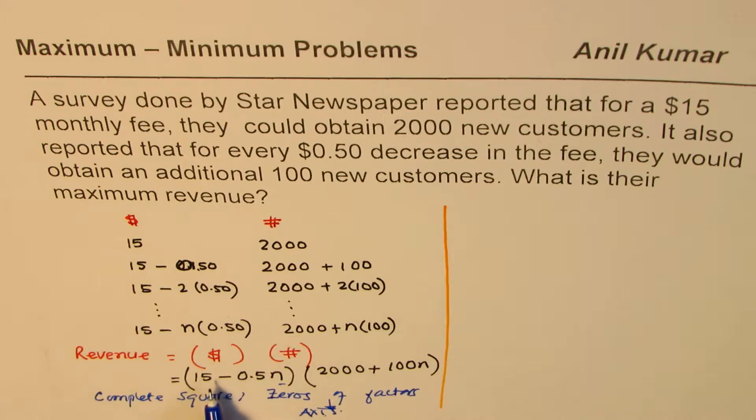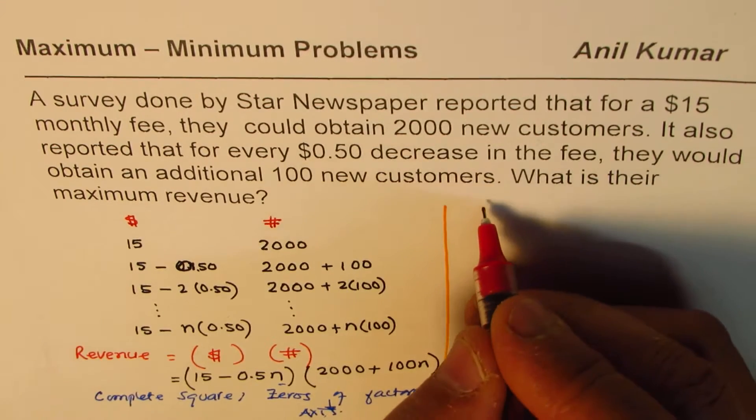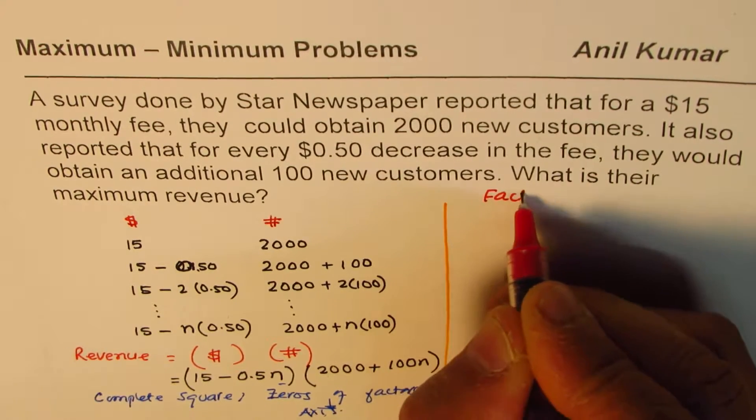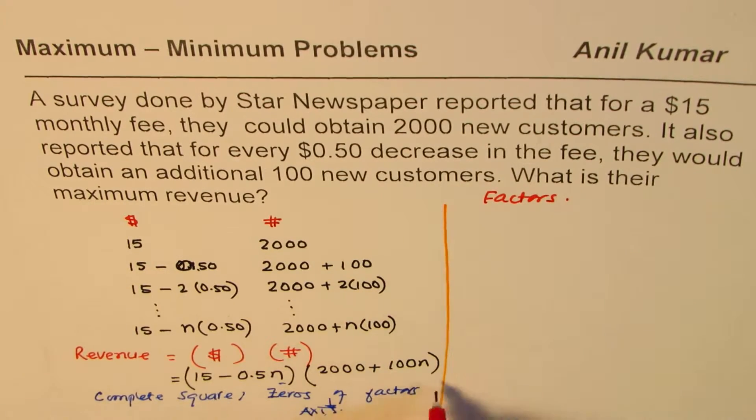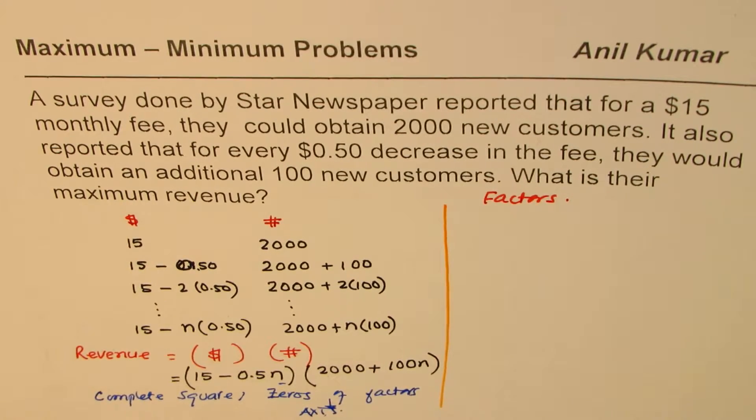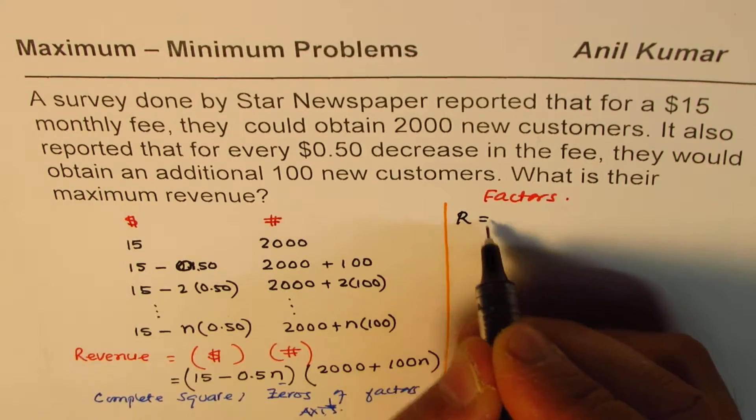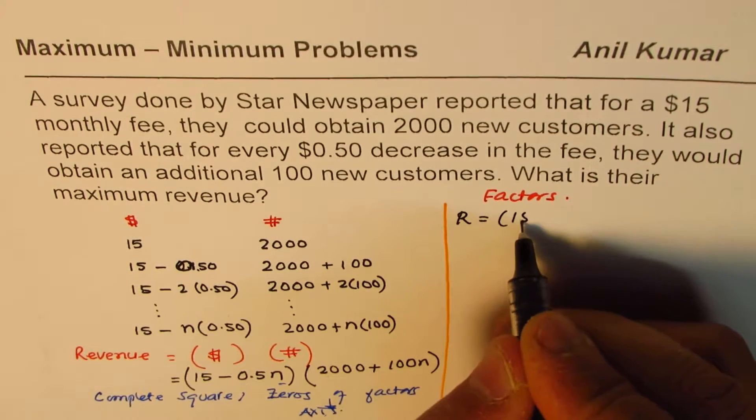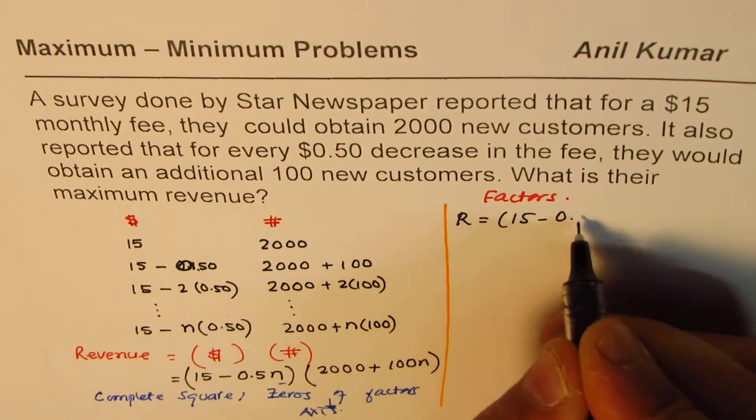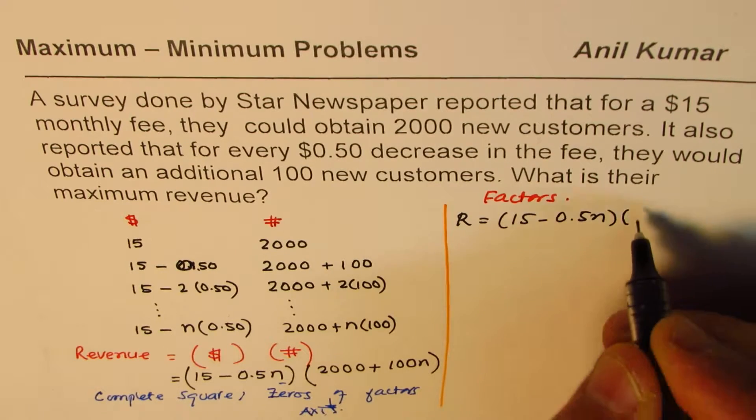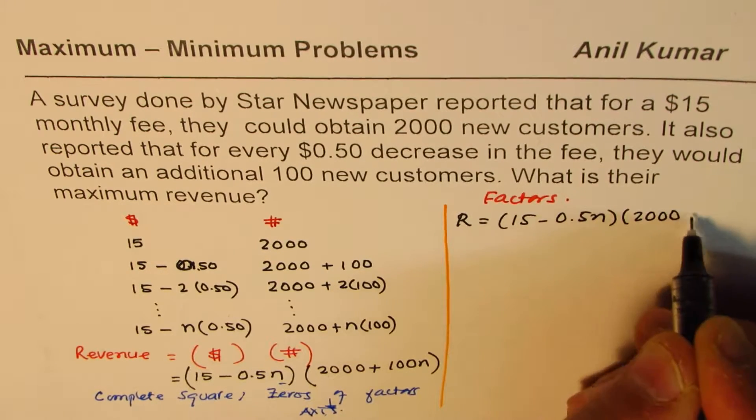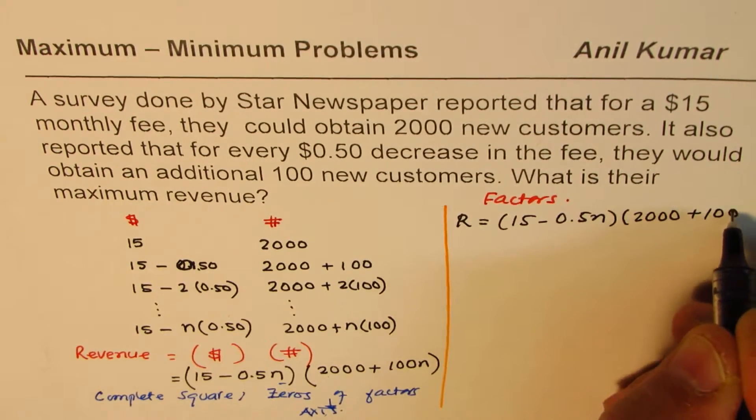So while completing the squares, we have to expand this and then do completing the squares. Let me solve using factors. So the method which I'm sharing with you is to use the factors themselves. Since we have the equation in factored form, the revenue is equal to 15 minus 0.5n times 2000 plus 100n.